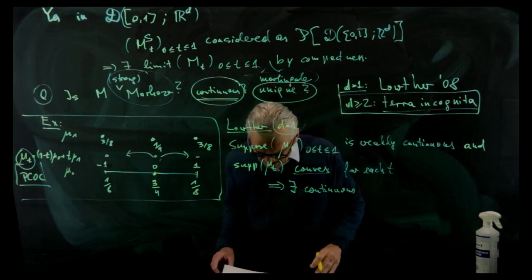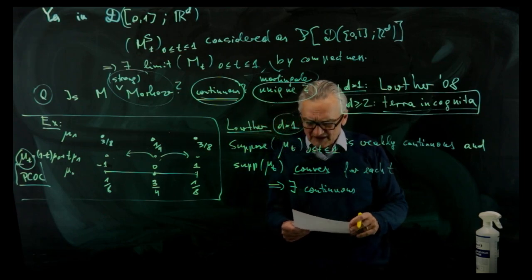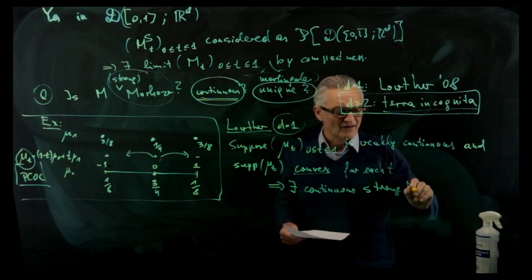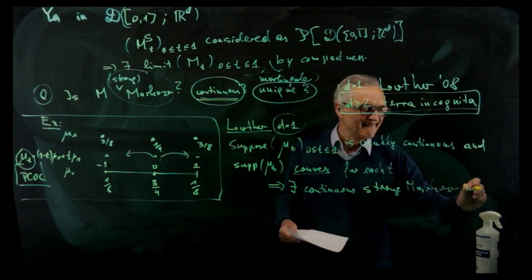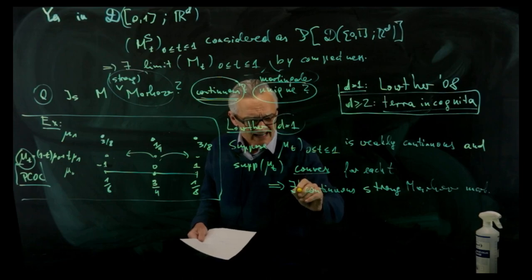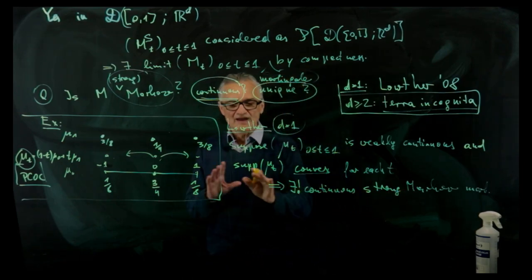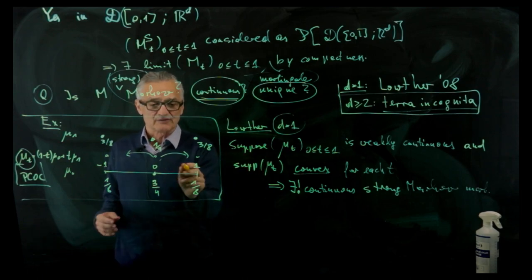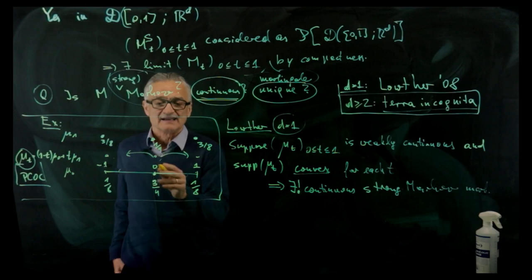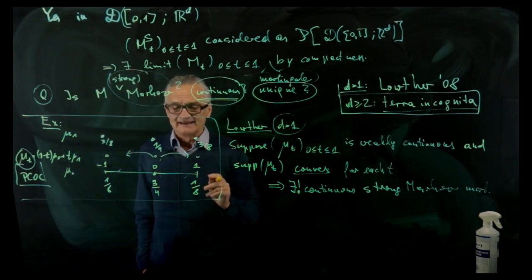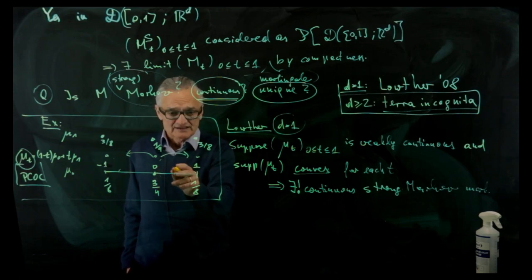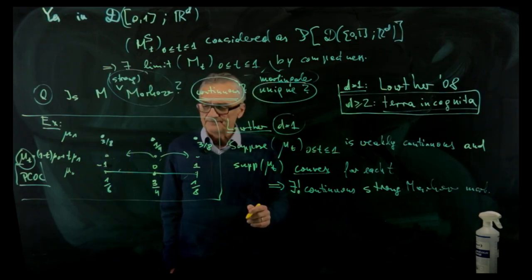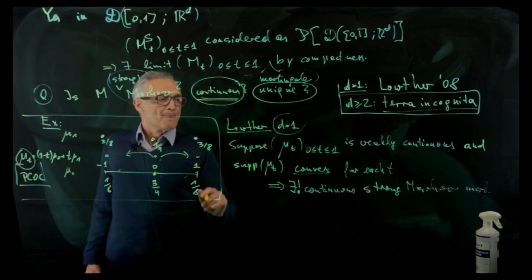Then it follows: there exists a continuous mimicking martingale, there exists a continuous Markov martingale, and there exists a unique continuous strong Markov martingale — so we have everything. Look at the example: there the support is not a convex set because we have holes, and the idea is that when there are holes, in the limit you lose the continuity.